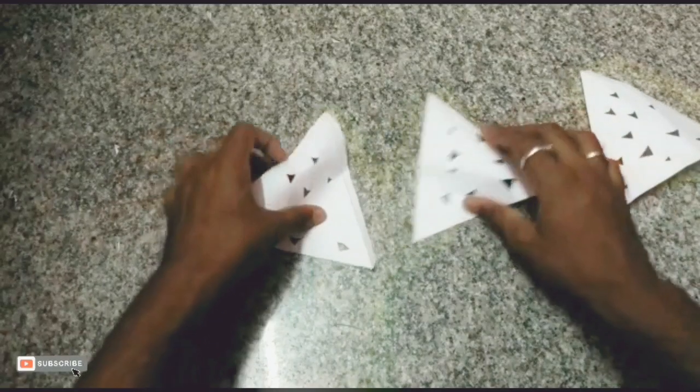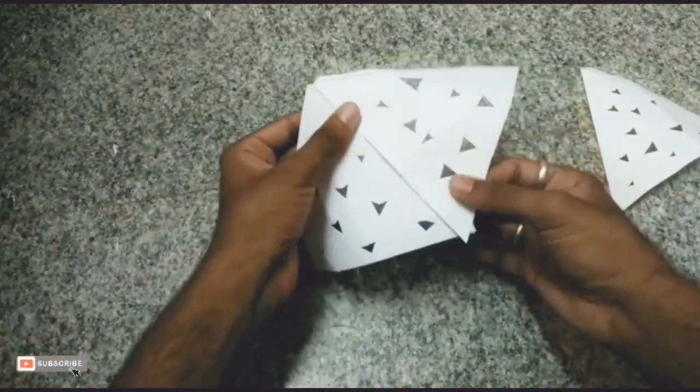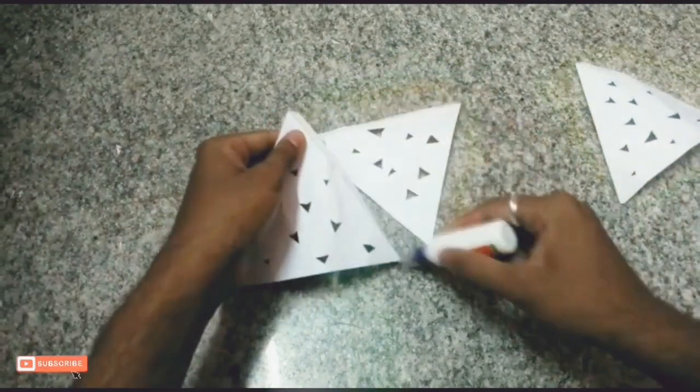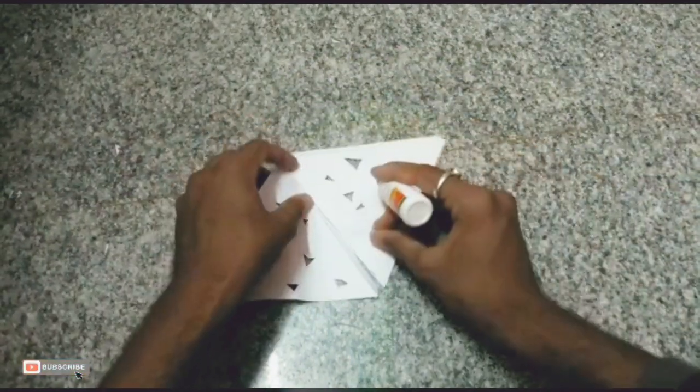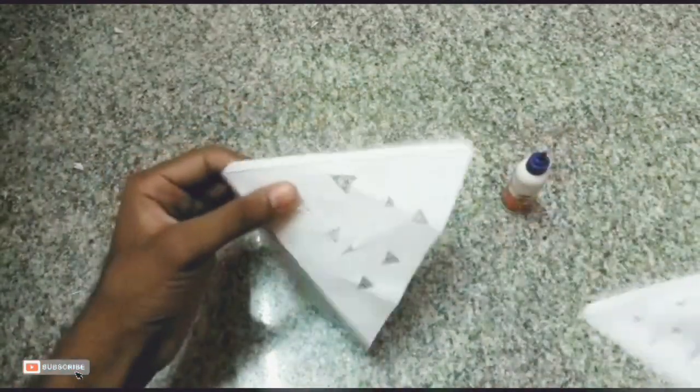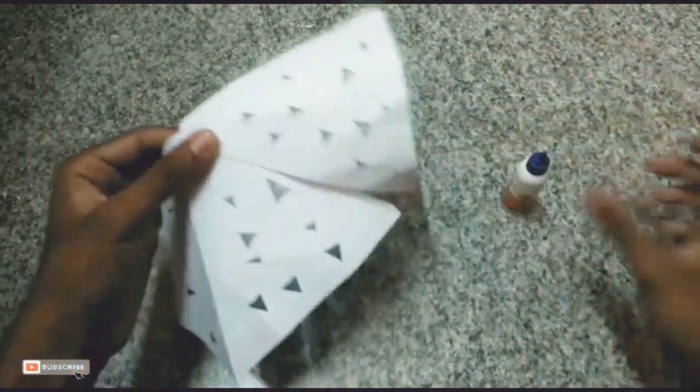Then we need to stick the papers. First take the two papers and stick the first paper and the second paper with glue. We have fixed it. Then take the third paper and fix the third paper to the remaining papers.